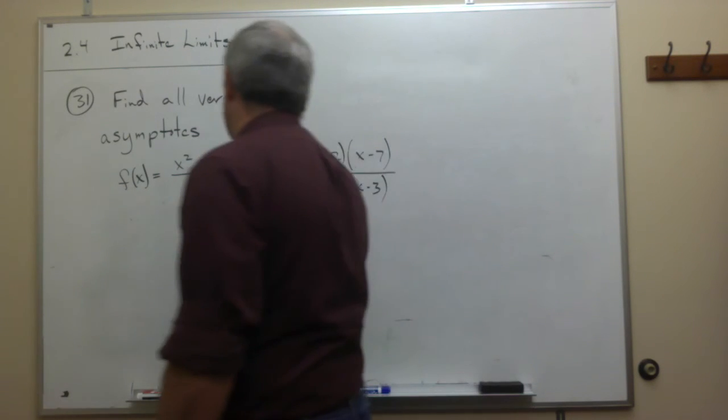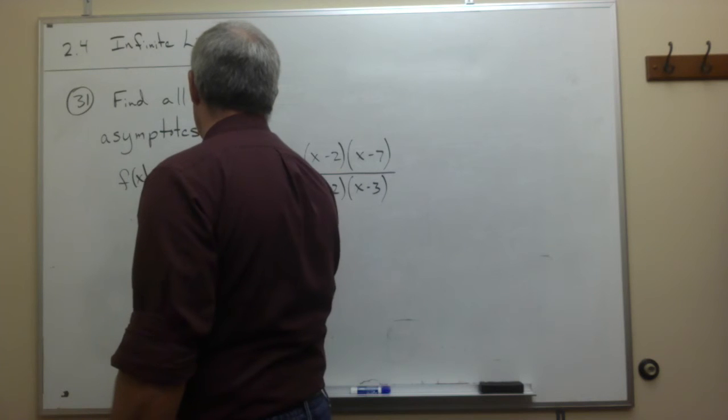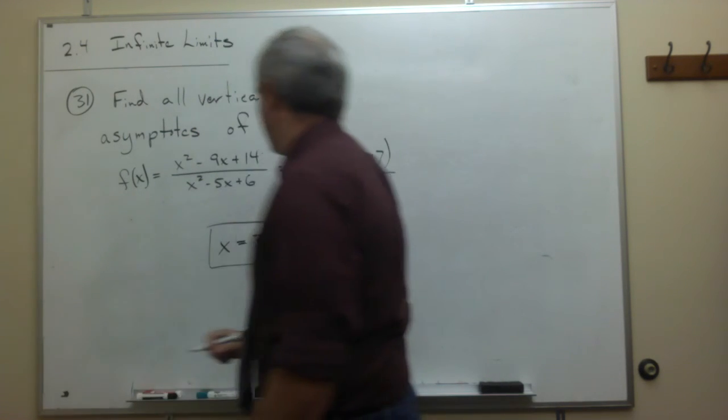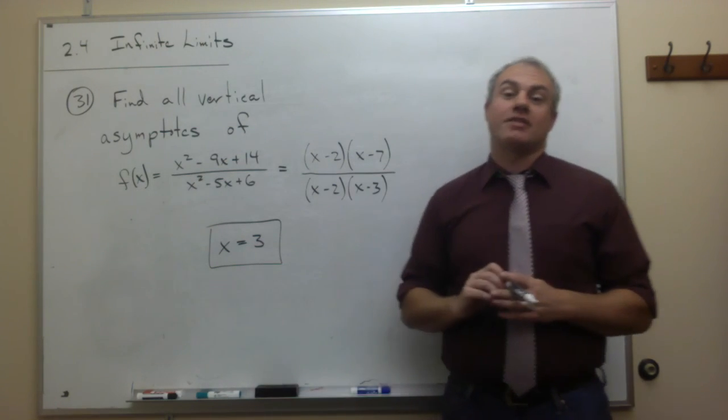So, the vertical asymptote on this graph would be when x is equal to 3. Or the equation of that vertical asymptote would be x equals 3.